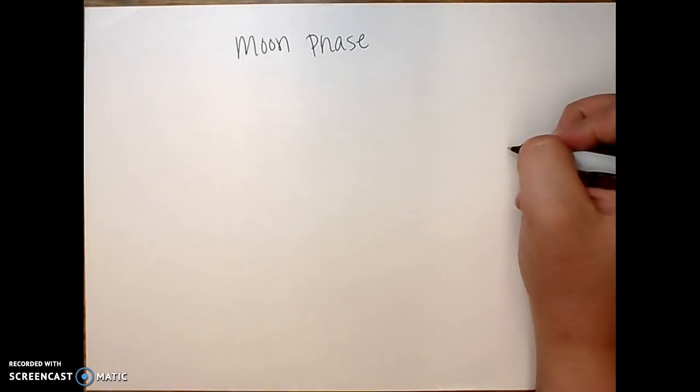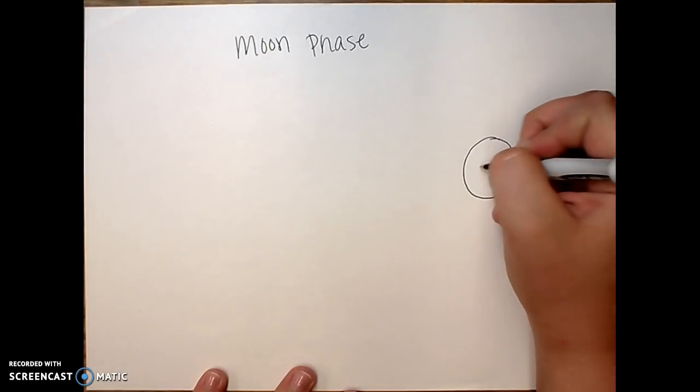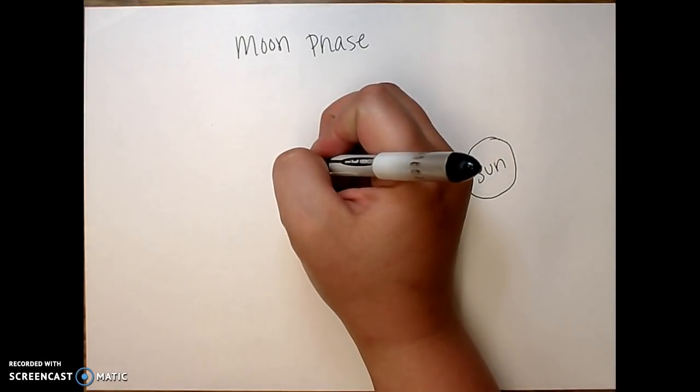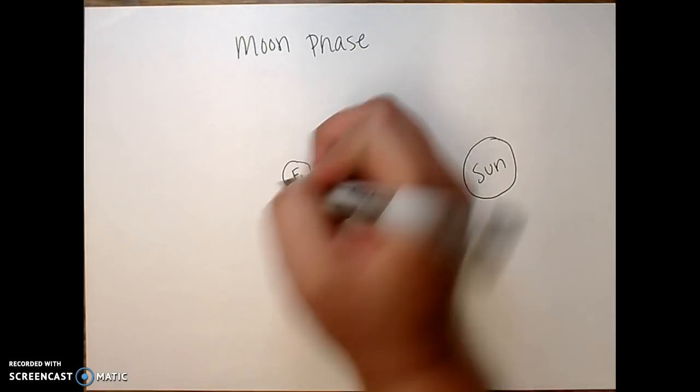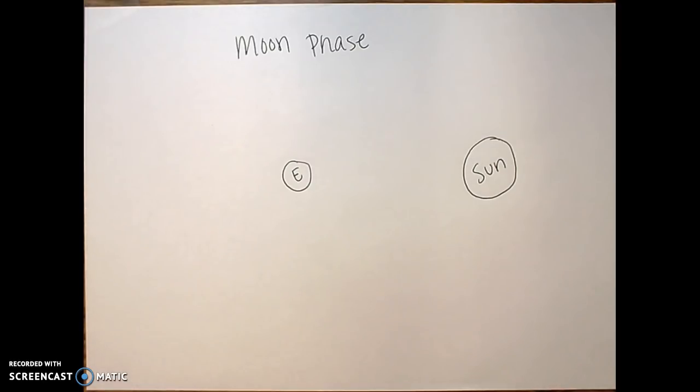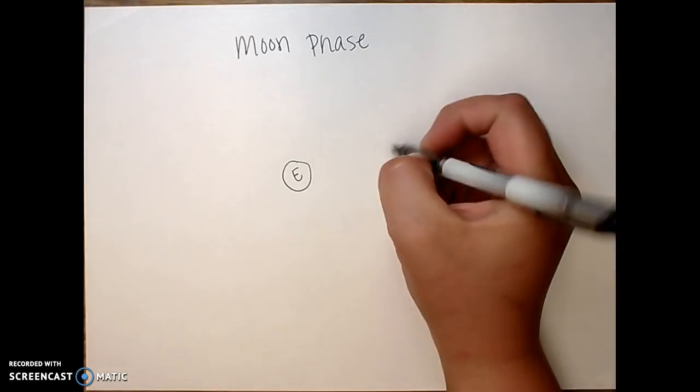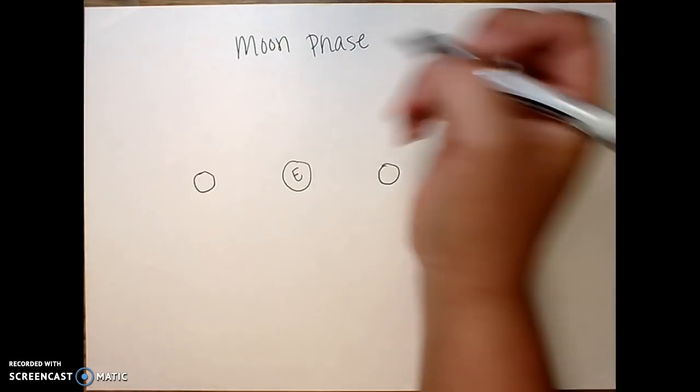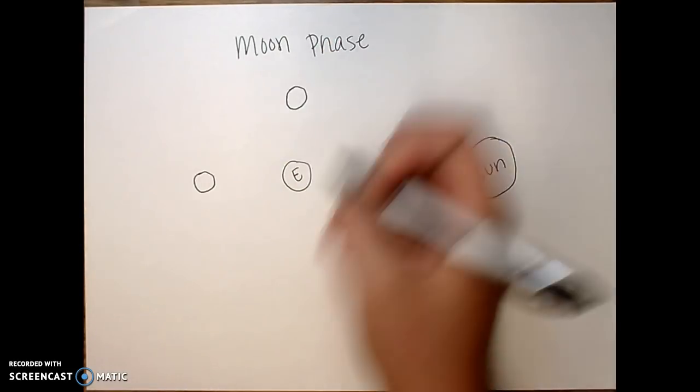So the first thing we always start with is the sun. I traditionally like to put my sun on the right side. The second thing we need is an Earth. And so we need to remember that there are eight phases. So we're going to go ahead and draw our eight phases around. And I like to start with my four major phases and then fill in in between.